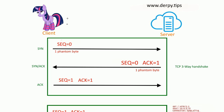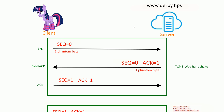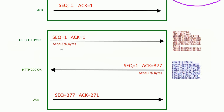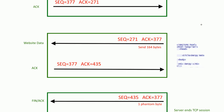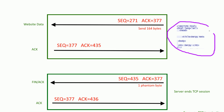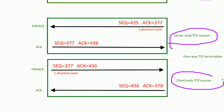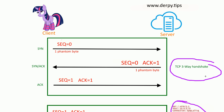To recap: the client accessed the webpage on the server, and we started with the three-way handshake. Then the client sent a GET request and got back an OK. Then the server sent us the data. After all the data was sent, the server ended its side of the connection, and then the client ended its side of the connection. Thank you for watching, and I hope this was helpful.